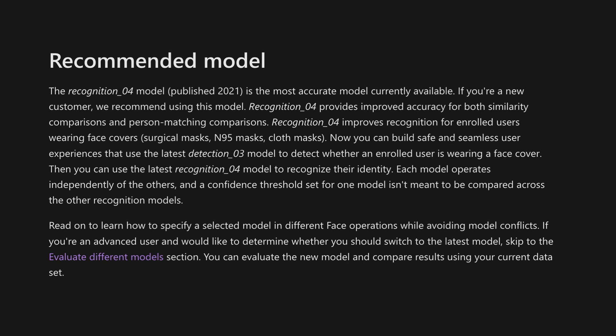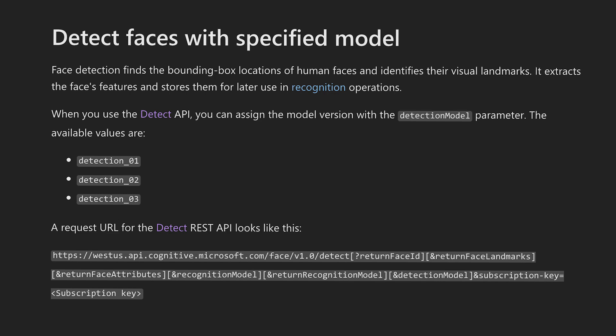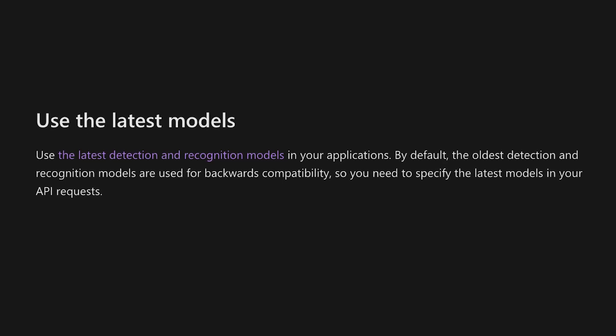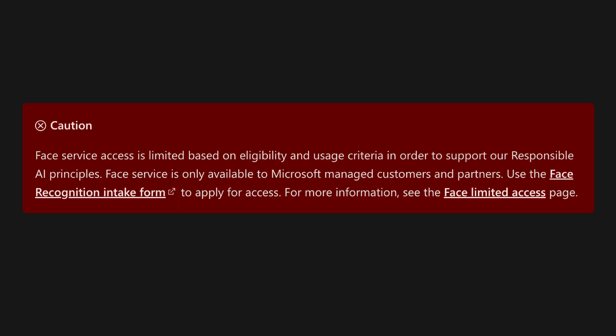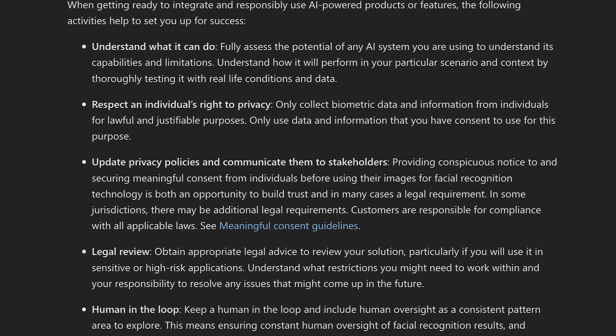These recognition models are for face recognition capabilities, but we also have three models to choose from for face detection. Different detection models are optimized for different tasks — Detection 01 is the default choice for all face detection operations, but it's not optimized for small or blurry faces. For that, you're better off using Detection 02 or 03. Pause the video and check exactly what each of these return. All these models work independently, so confidence thresholds shouldn't be compared between them. The challenge with the face service for recognition is that because it's so powerful, Microsoft decided to make it available only to managed customers and partners, with responsible AI principles and limited access policies in place for advanced features like comparing or identifying individuals.